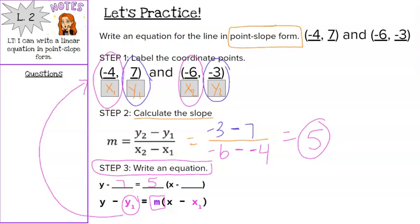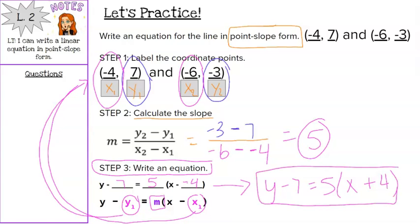And then x minus x1, so again, we go back up to our coordinate point, and which number was labeled x1, negative 4. So then we do want to simplify this. We're going to rewrite it. y minus 7 equals 5 times (x minus negative 4) is really plus 4. And that's your final answer.